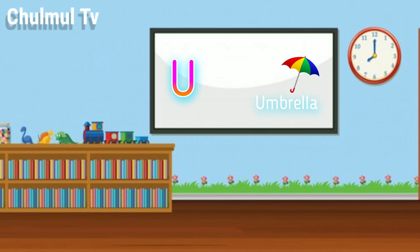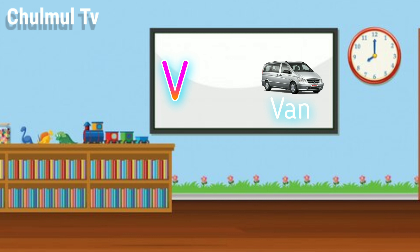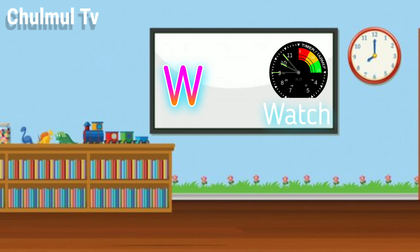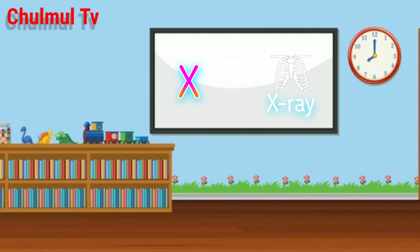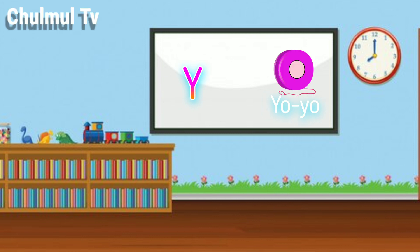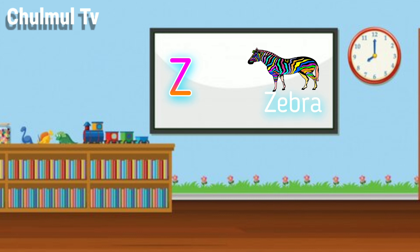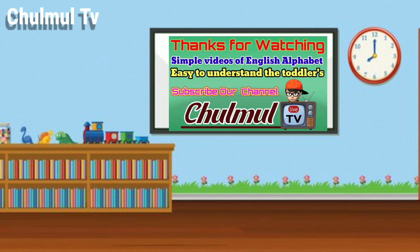U for umbrella, V for van, W for watch, X for X-ray, Y for Yoyo, Z for zebra. All videos of English alphabet.